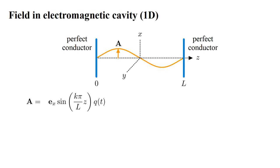We write A equals e_x, the unit vector in the x-direction, times sine(kπ/L)z, times a time-varying amplitude, q(t). Here k is a positive integer.